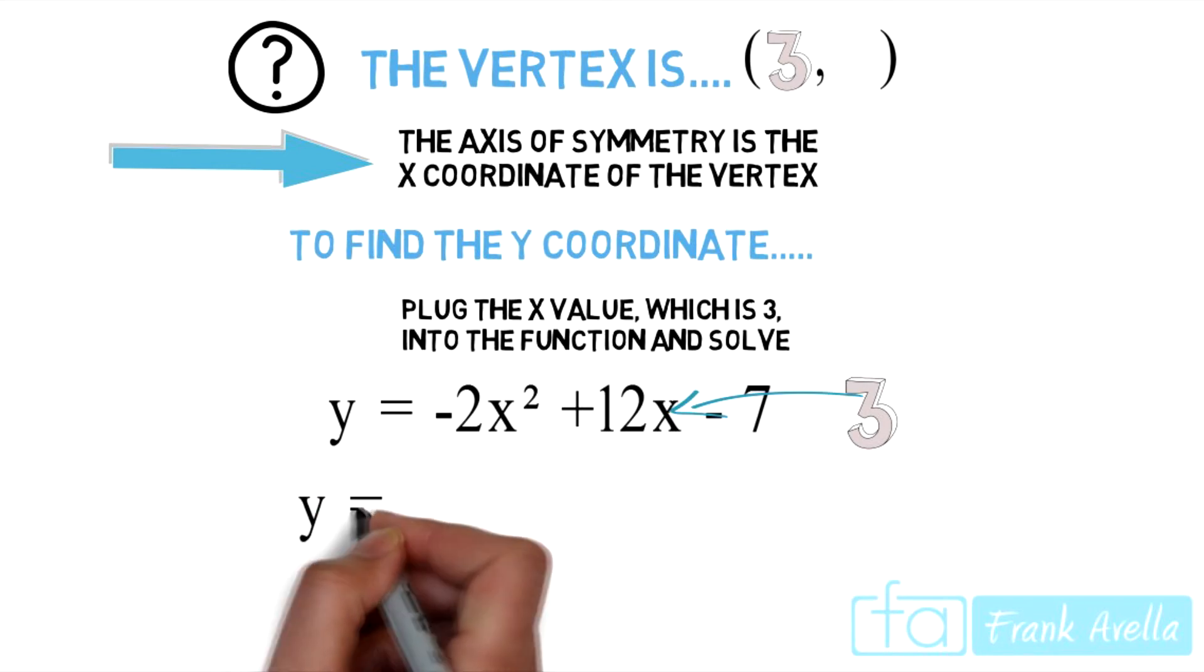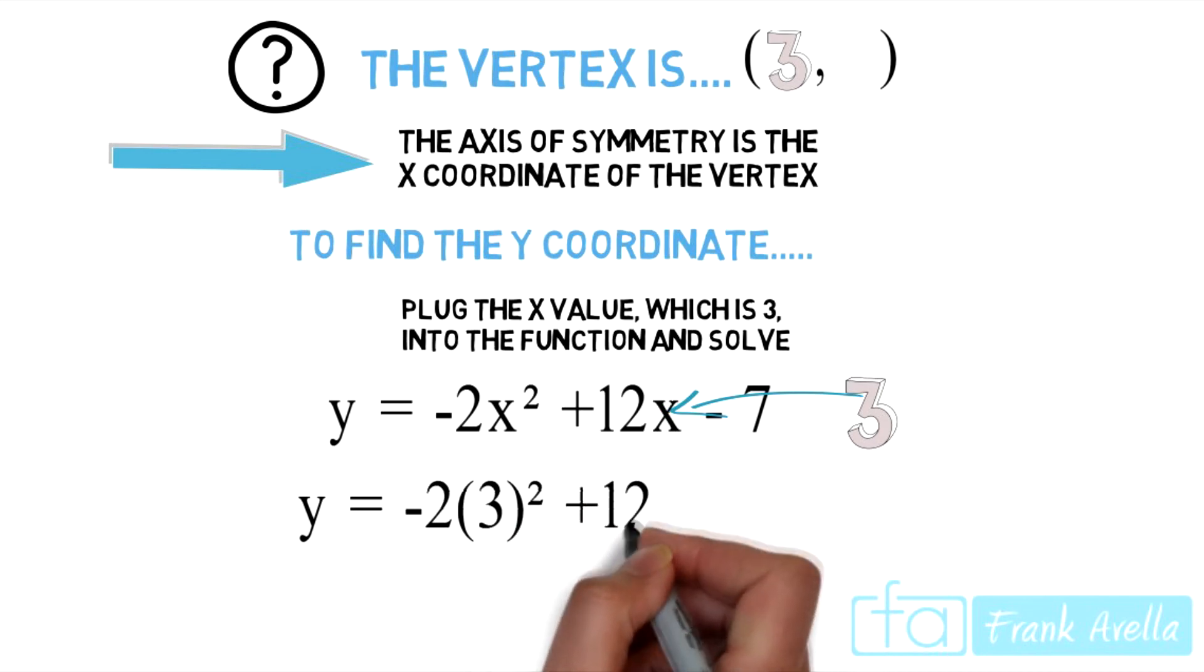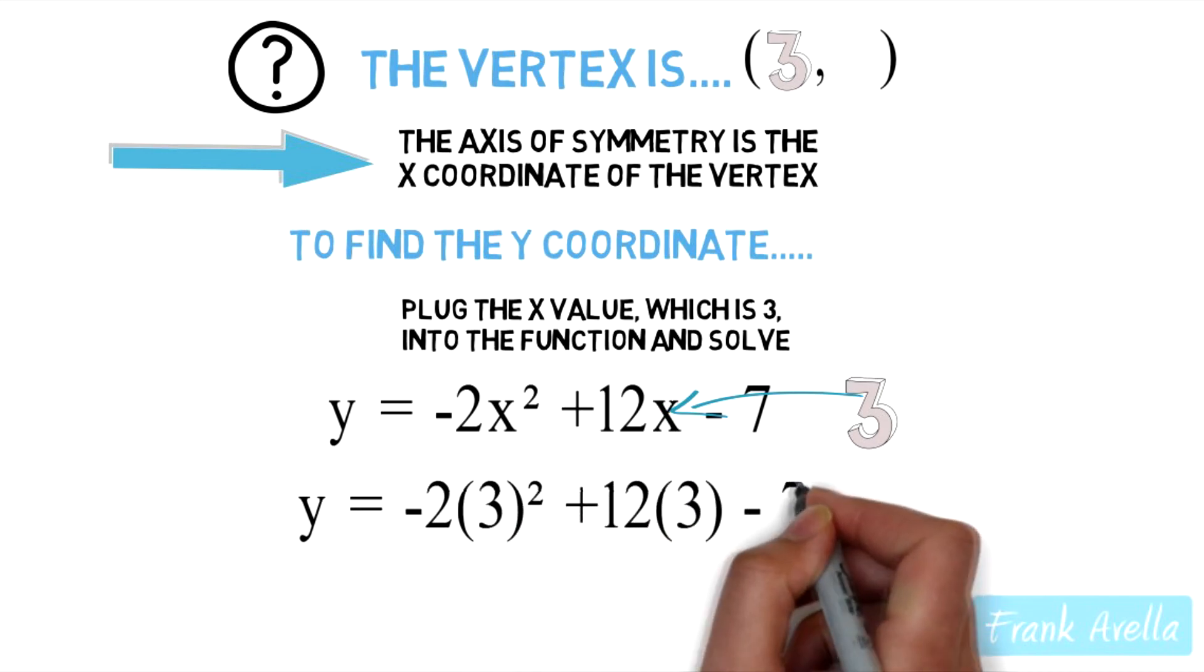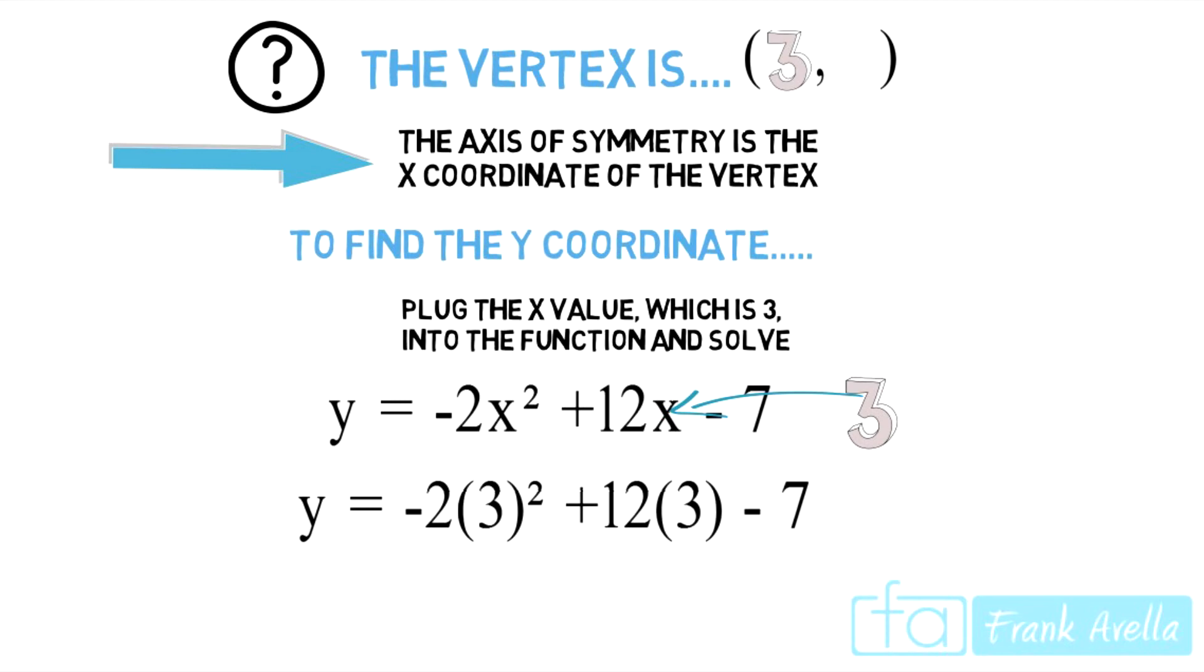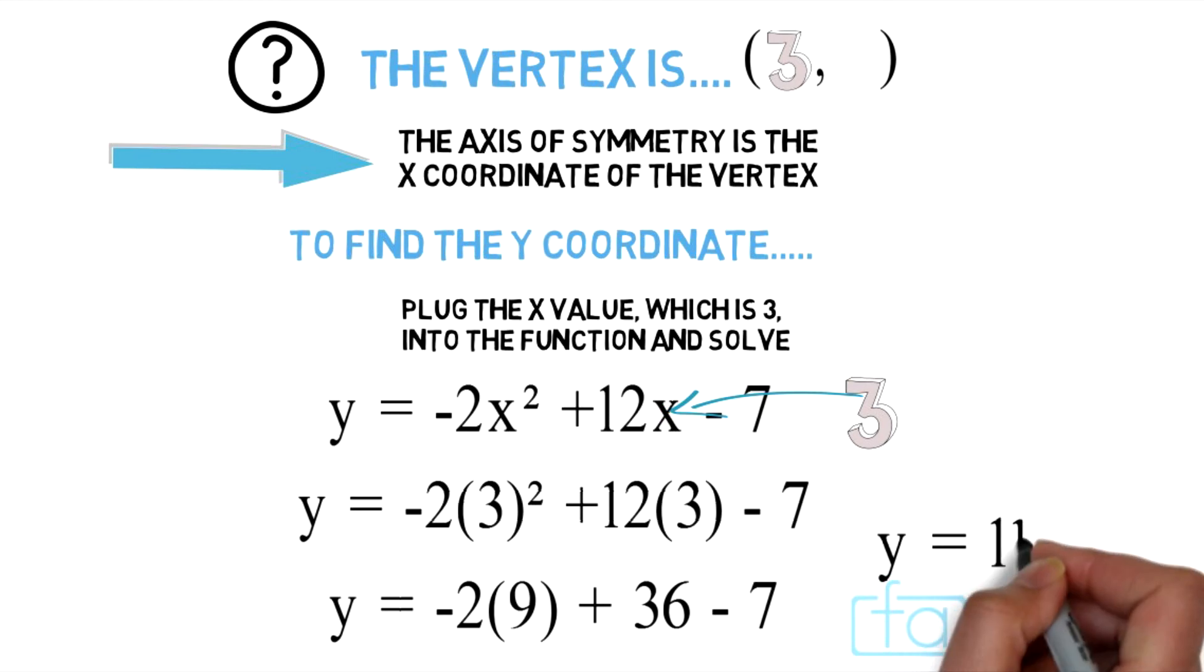We can rewrite that out as y equals negative 2 times 3 to the second power, plus 12 times 3 minus 7. Moving forward, don't forget order of operations. So you get y equals negative 2 times 9 plus 36 minus 7, which gives us y equals 11.